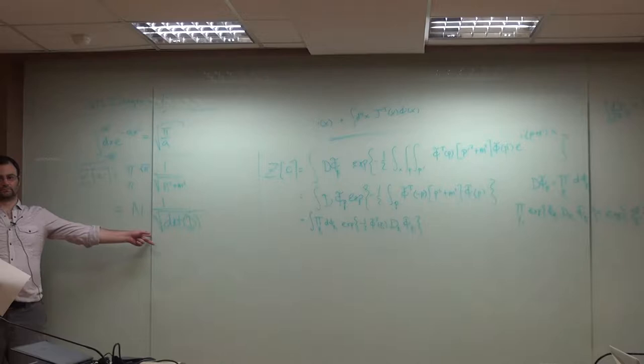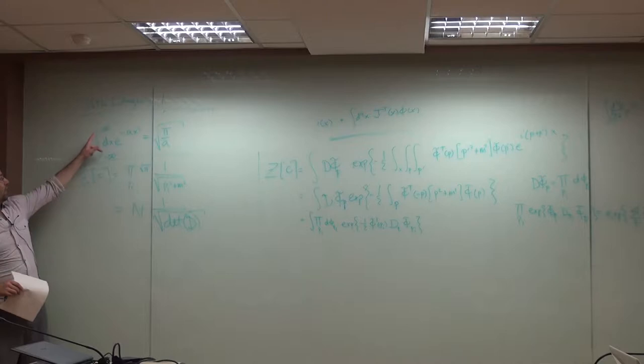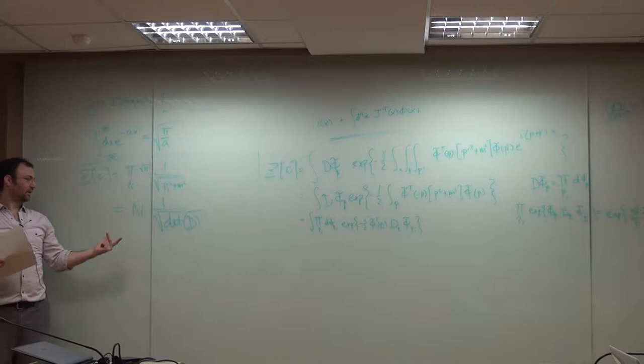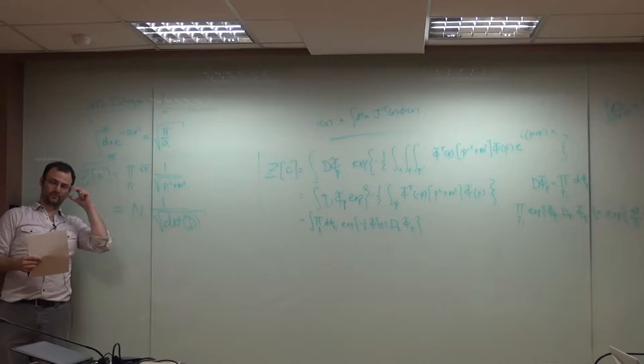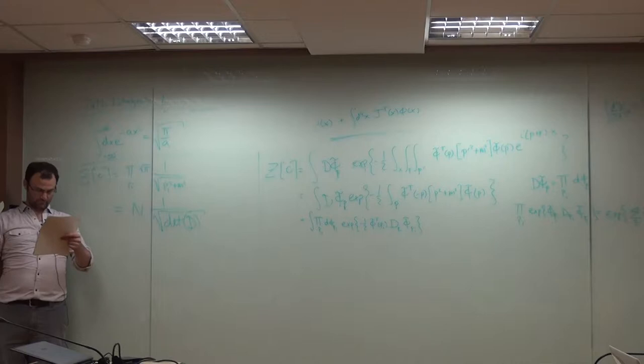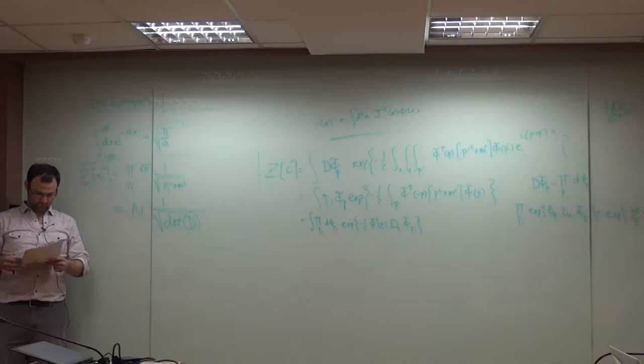And if you had a complex scalar field theory instead of real, you'd have a phi and a phi star. What you could write is phi one and phi two and do the same thing. Instead of having one over the square root of the operator, you'd have one over the determinant of the operator. Any questions?